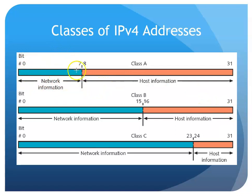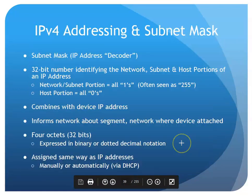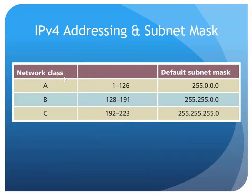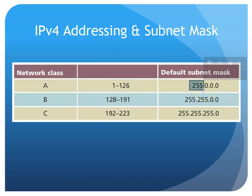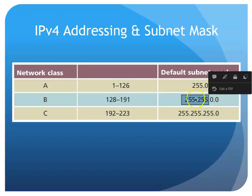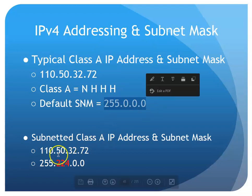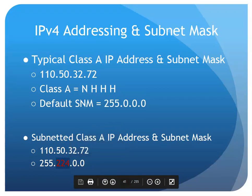Class A: the first octet is network. Class B: the first two octets are network. Class C: the first three octets are network. The subnet mask is a decoder telling us what part of the address is network and what part is host. Default subnet masks: Class A is 255.0.0.0; Class B is 255.255.0.0; Class C is 255.255.255.0. If we see a different number in what should be the host portion, we know subnetting has occurred — and we'll get to that later this chapter.